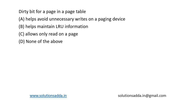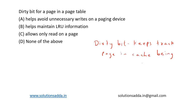That is the important point about dirty bit — it keeps track of a page in cache being modified. Dirty bit is set when a page needs to be modified and it needs to be copied back to the main memory. So it is used to avoid unnecessary writes on a paging device.